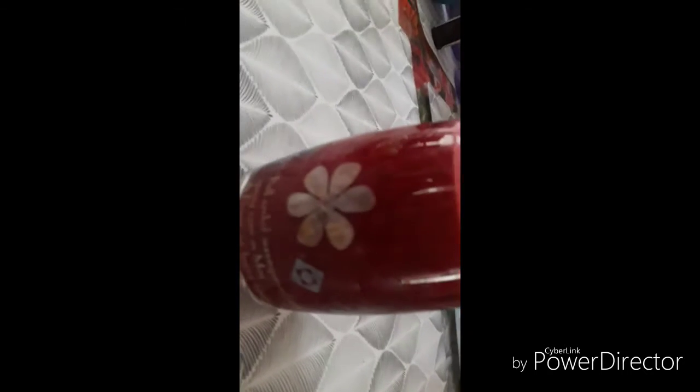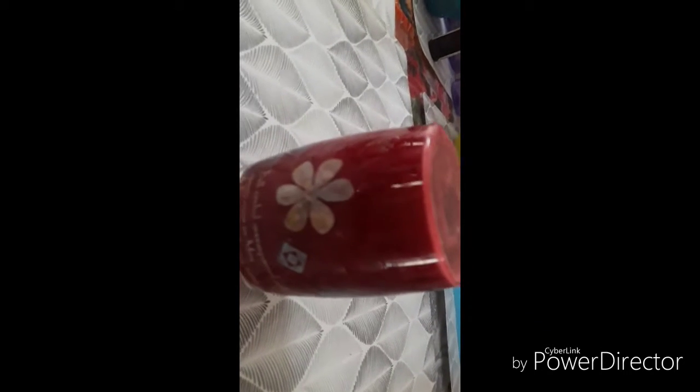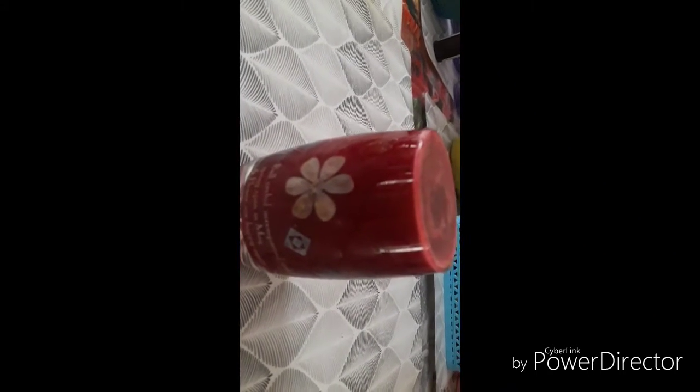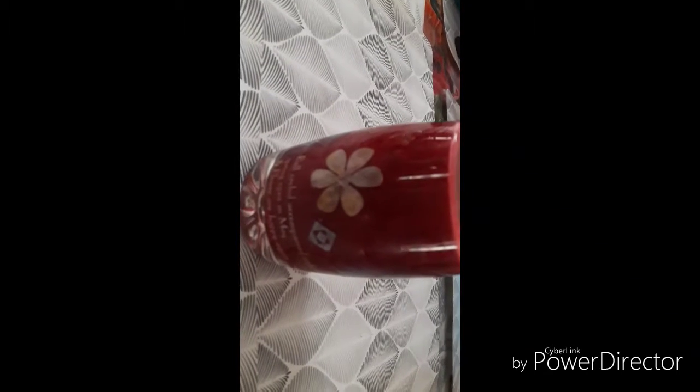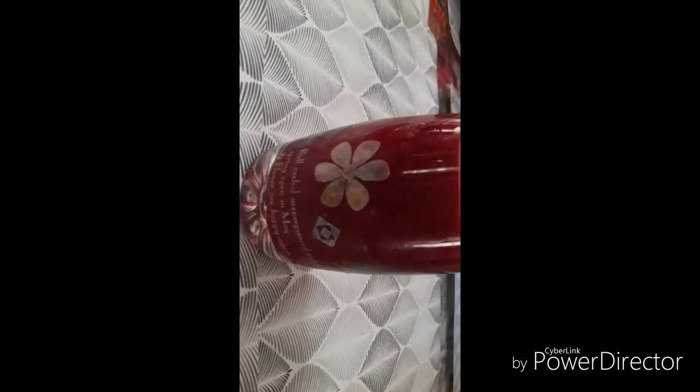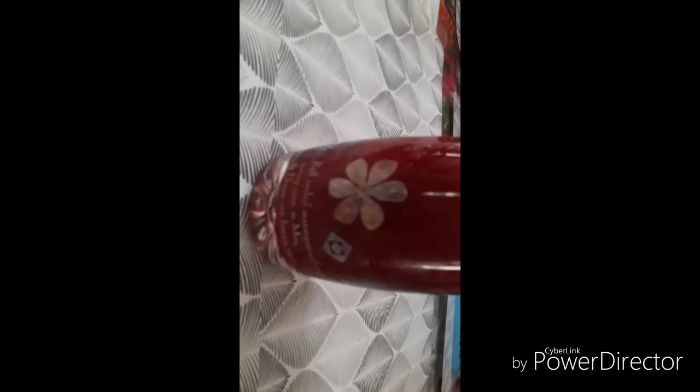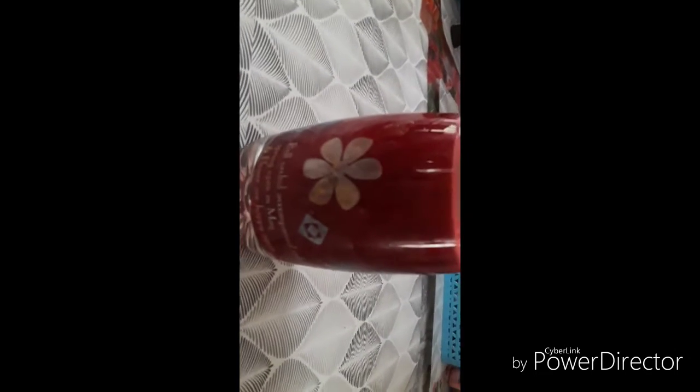Beetroot increases hemoglobin levels in the body. Carrots are good. Chia aids weight loss. This is a coolant.